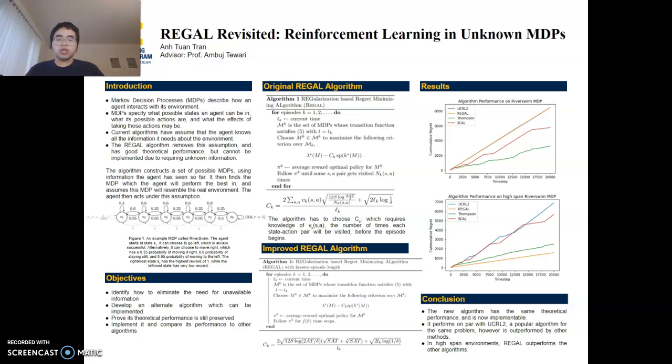However, in order to construct this set of plausible MDPs, the algorithm relies on information about what state the agent will visit in the future before the agent actually visits them. This information is impossible to gather.